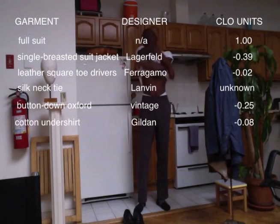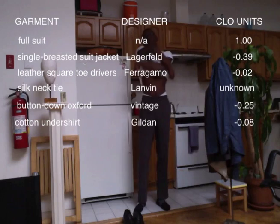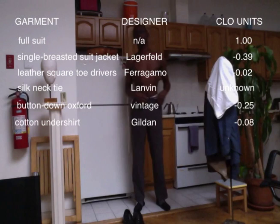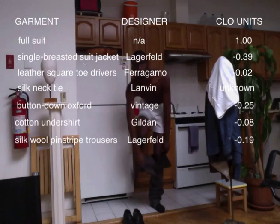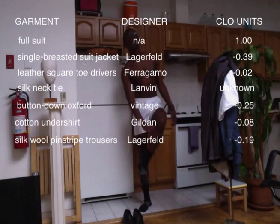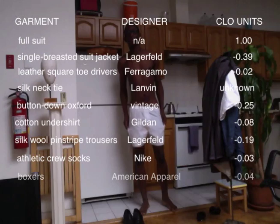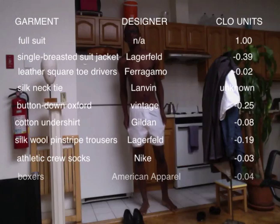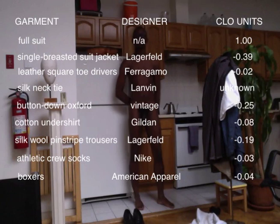Cotton undershirt by Gildan. Minus 0.08 CLO units. Silk wool pinstripe trousers by Lagerfeld. Minus 19 CLO units. Athletic crew socks, Nike. Minus 0.03 CLO units. Boxers by American Apparel. 0.04 CLO units. Nothing. 0 CLO units. 0 CLO units is equal to wearing nothing at all.